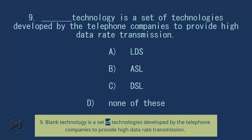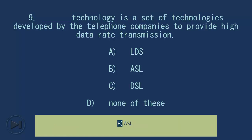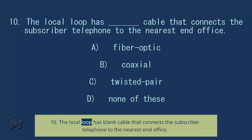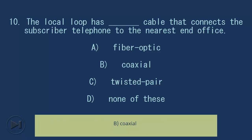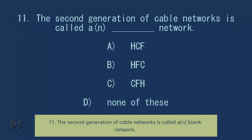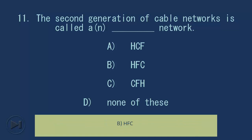Question 9: Blank technology is a set of technologies developed by the telephone companies to provide high data rate transmission. A. LDS. B. ASL. C. DSL. D. None of these. Answer: C. DSL. Question 10: The local loop has blank cable that connects the subscriber telephone to the nearest end office. A. Fiber optic. B. Coaxial. C. Twisted pair. D. None of these. Answer: C. Twisted pair. Question 11: The second generation of cable networks is called a/n blank network. A. HCF. B. HFC. C. CFH. D. None of these. Answer: B. HFC.